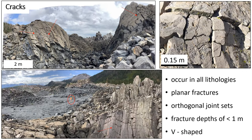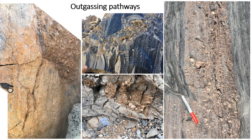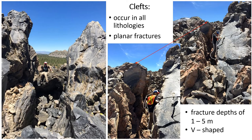Now we're going to zoom in to smaller scale structures seen at Obsidian Dome. Cracks are ubiquitous and occur in all lithologies. They are identified by planar fractures, generally formed in orthogonal joint sets, as seen in the several images provided. Fracture depths are less than 1 meter and they are generally created in a V shape. Outgassing pathways of tuffisite generally occur within cracks or are cross-cut by cracks. In the bottom photo, we see ash-to-lapilli-sized clasts annealed onto an obsidian surface with mode 1 tension fractures cutting the surface and the lapilli coating. Tuffisite veins in flow-banded obsidian are also seen either cross-cutting or running in line with the flow bands, and these tuffisite-to-lapilli veins are found in all lithologies across Obsidian Dome.